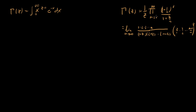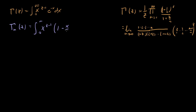What I'm going to do is show that this gamma function can be rewritten in a form that is exactly the same as this limit. Here's how I'm going to do it: I'm going to define a new function called the partial gamma function, gamma sub m of z, and define it as the integral from 0 to m of x to the z minus 1 times (1 minus x over m) to the m dx.